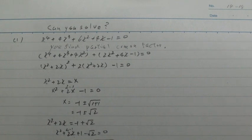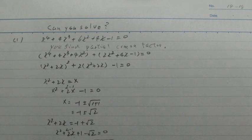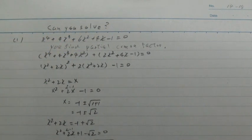Francis 1: x^4 + 4x^3 + 6x^2 + 4x - 1 = 0. This equation, you find partial common factor. This is point.